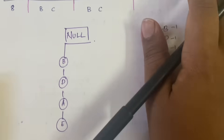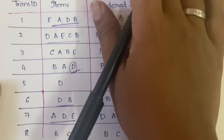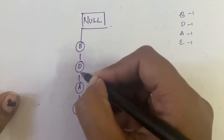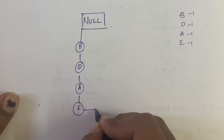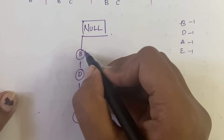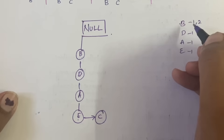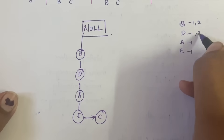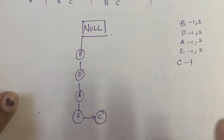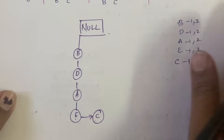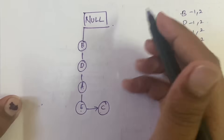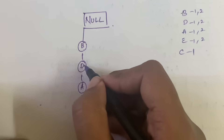After writing the occurrences, go to the next transaction. The next sequence is B, D, A, E, C. We already have B, D, A, E, so we continue down that path and just add C as a new node. The occurrences become 1 comma 2 for B, D, A, E since they are occurring for the second time, and C has occurred for only one time.